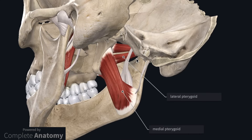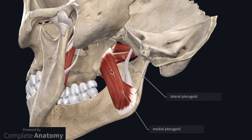Now I'll move on to the muscles of mastication. The pterygoid muscles are located medial to the mandible. The medial pterygoid muscle has two heads: a deep head and a superficial head. The deep head is attached to the medial aspect of the lateral pterygoid plate. The superficial head attaches to the maxilla as well as the palatine bones. Both heads run posteroinferiorly to fuse, and the fused muscle then inserts onto the ramus of the mandible.